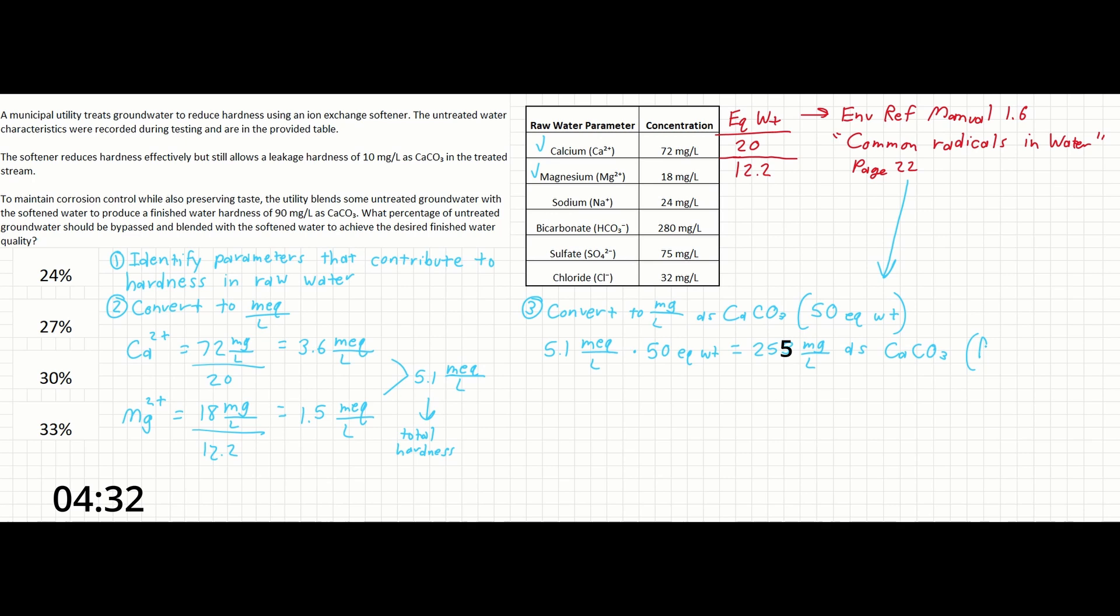Finally, we can apply the bypass fraction formula here to determine the percentage of water that needs to be bypassed in order to achieve the given finished water hardness. The equation for bypass hardness is going to be the finished hardness minus the leakage hardness over the raw hardness minus the leakage hardness.